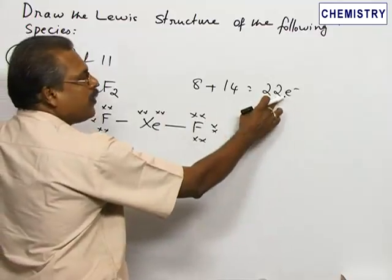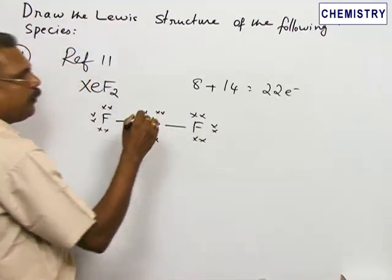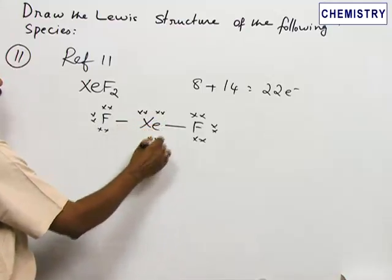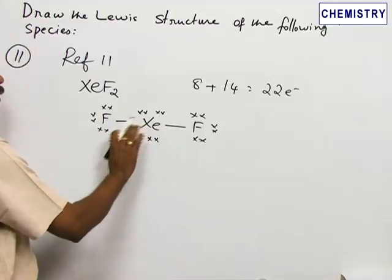The remaining two electrons must be allotted to xenon. Here - one, two, three, four, five - xenon is now surrounded with five electron pairs or ten electrons. This is called an expanded octet.